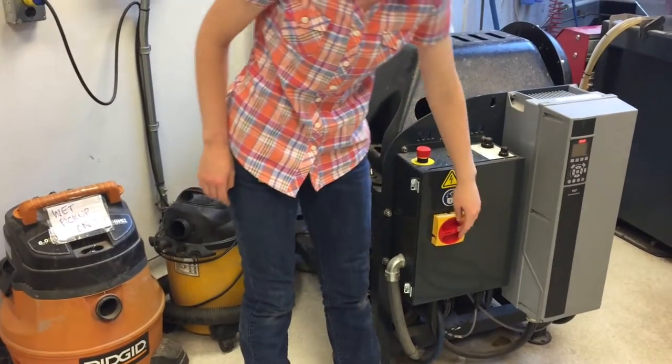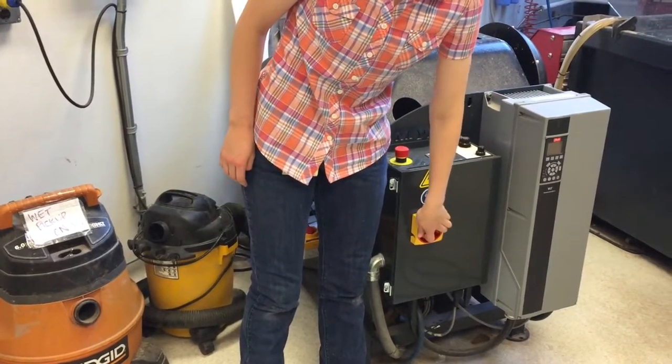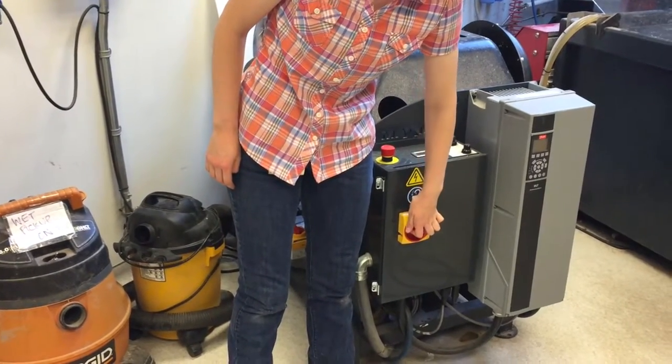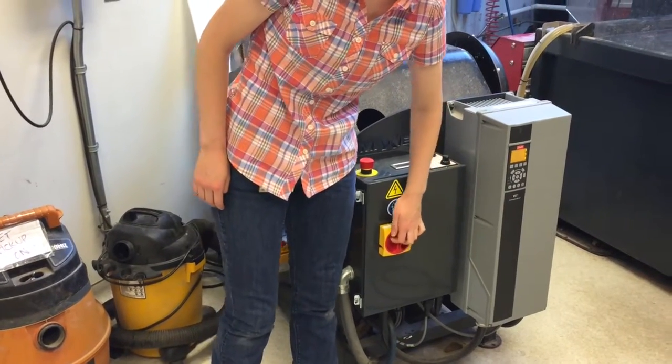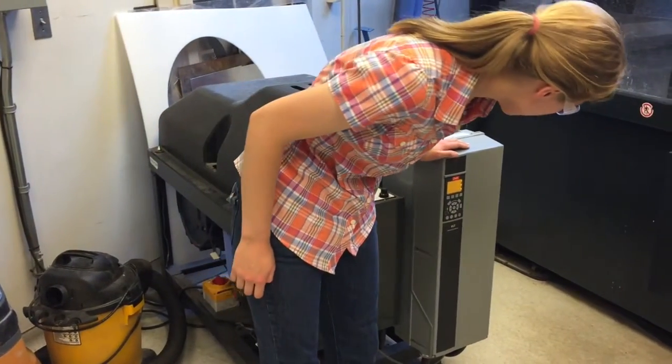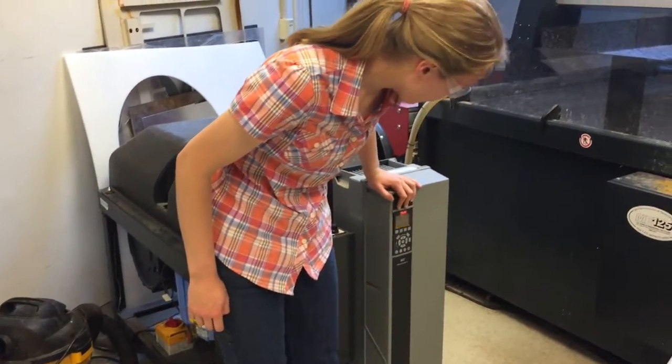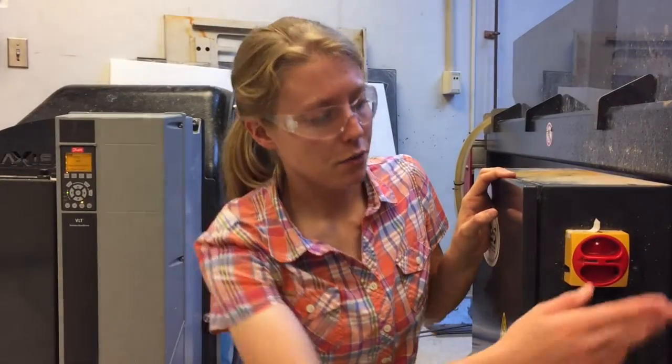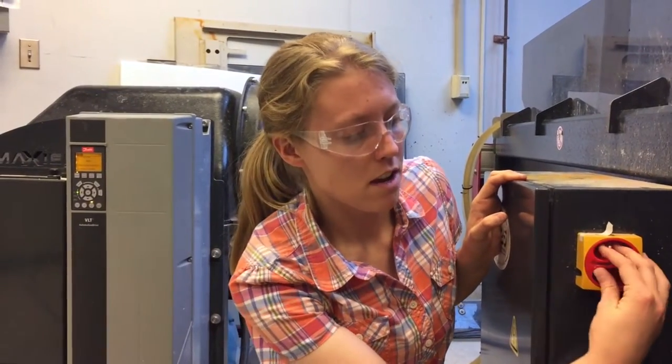Next, turn this red switch clockwise to the 12 o'clock position. When the pump first turns on, give it a few seconds to start up. Next, turn this red switch on the front of the water jet clockwise to the 12 o'clock position.